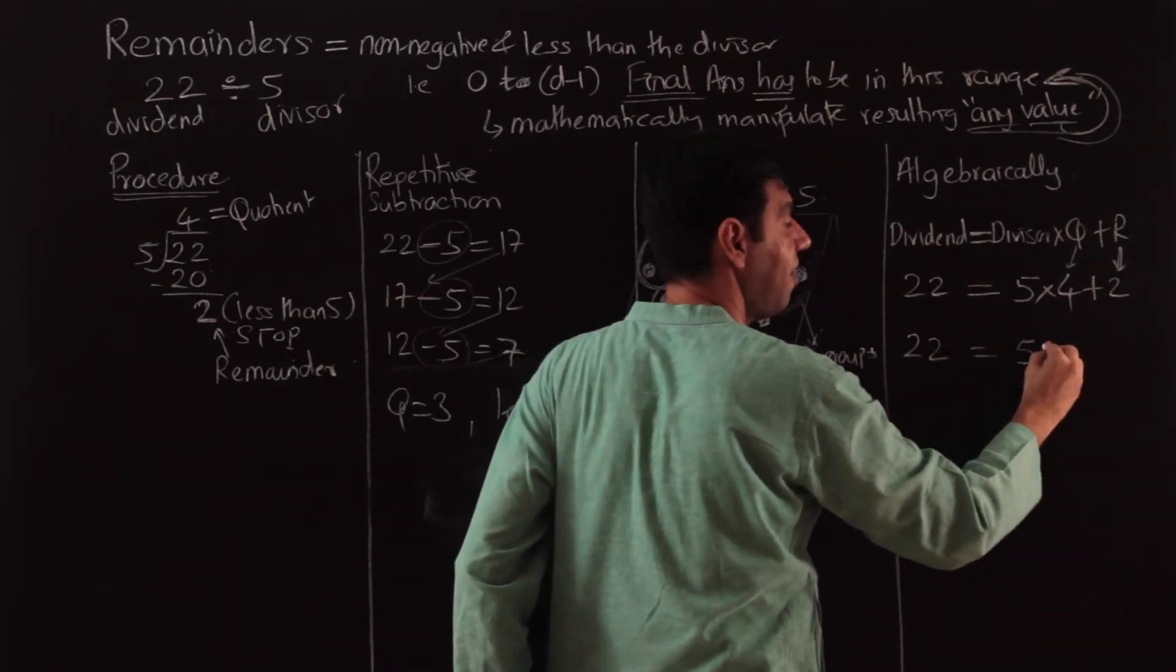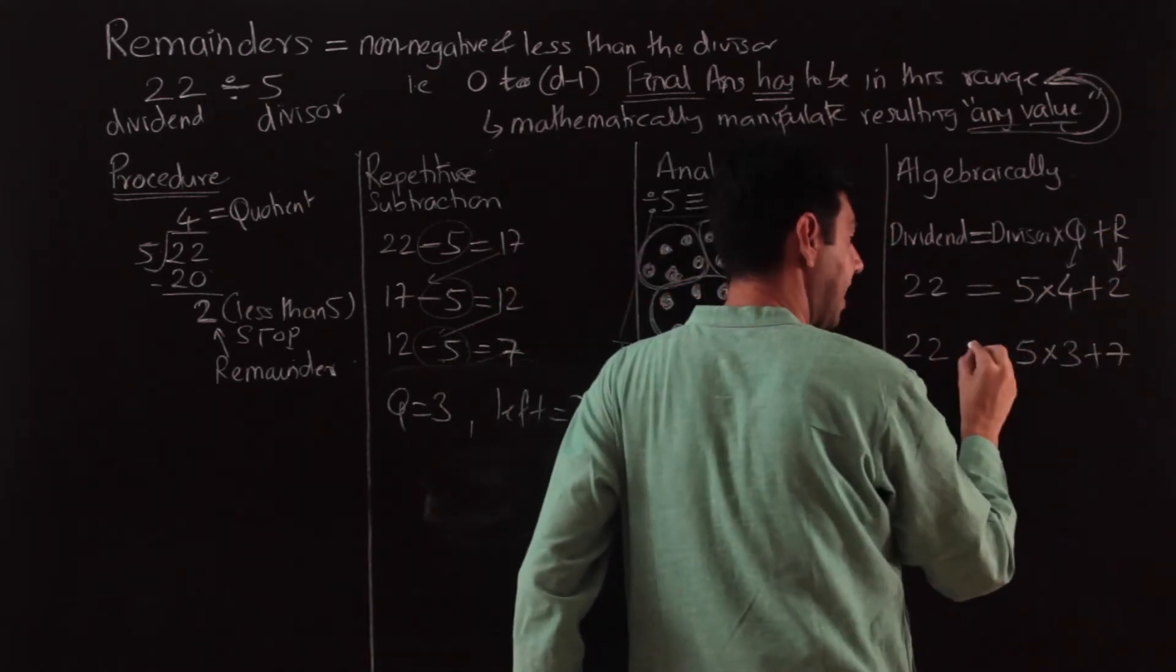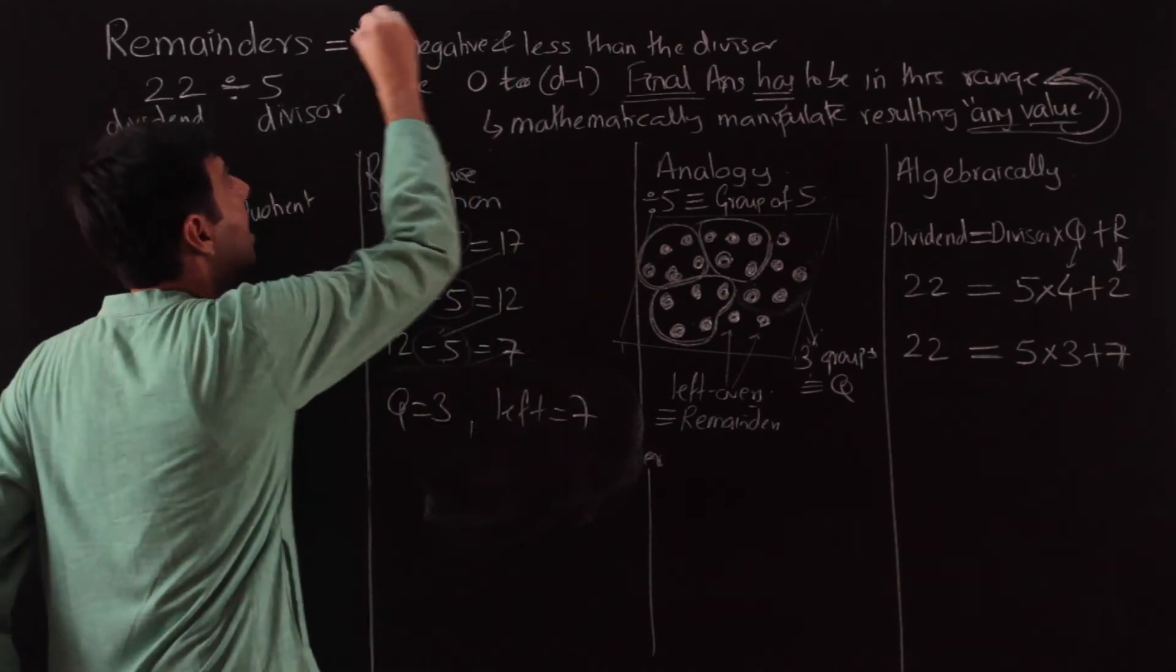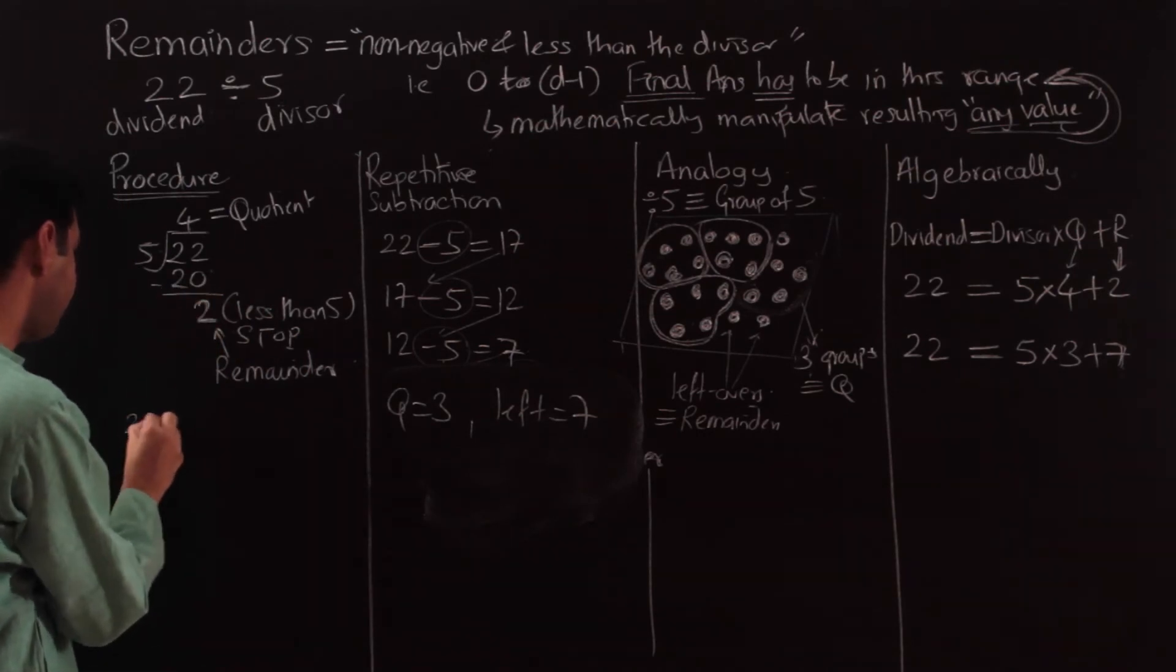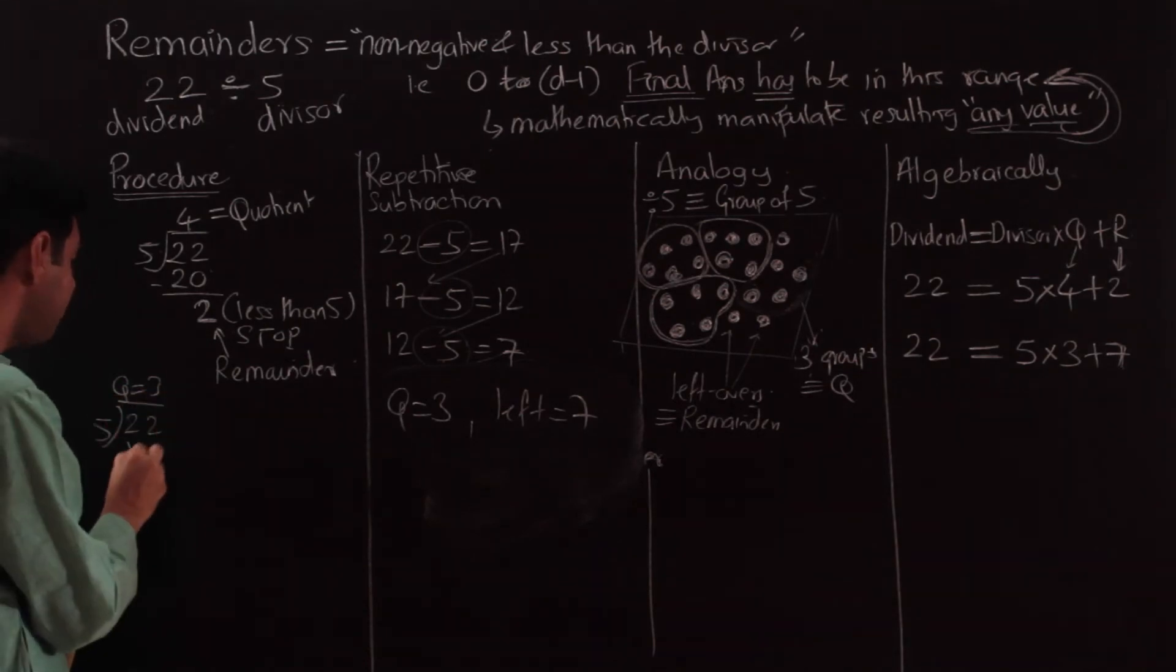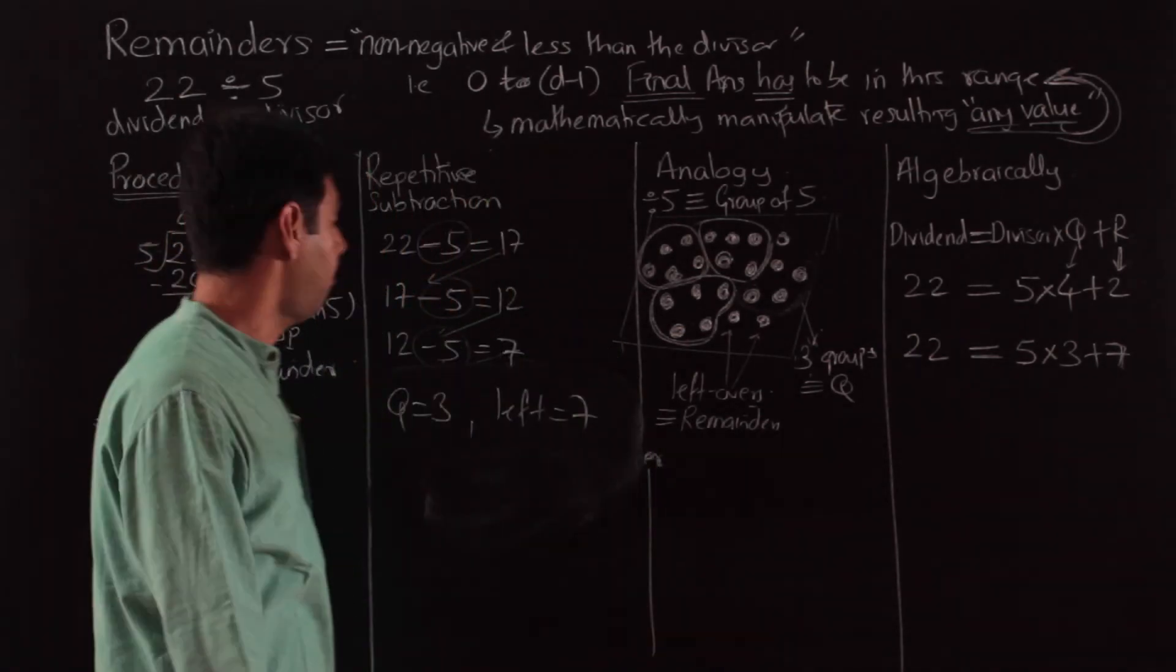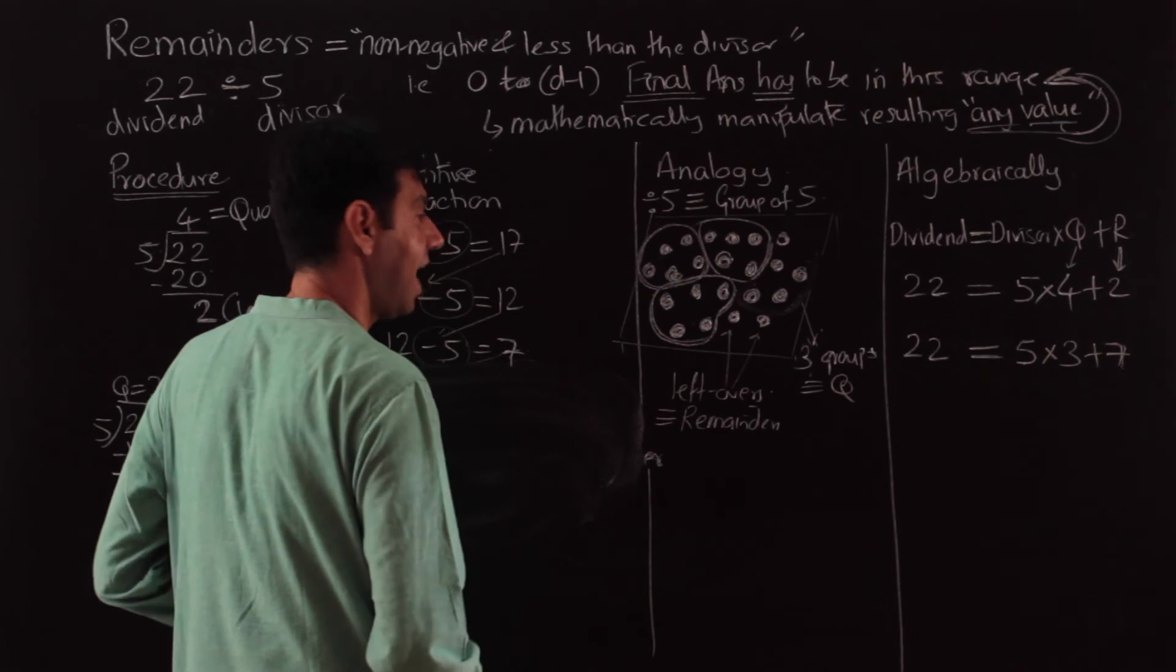So again I've got some value. If you want to write it algebraically, what am I doing? 5—how many groups? 3. 5×3 are 15, and what is left over is 7. So mathematically both sides are still balancing out. I could still say this forms a relation like this, except that the remainder is not in the traditional values that we expect. You could even do this: 22 divided by 5, put a quotient of 3. 5×3 is 15, subtract and I get 7. So again, nothing wrong in this process.